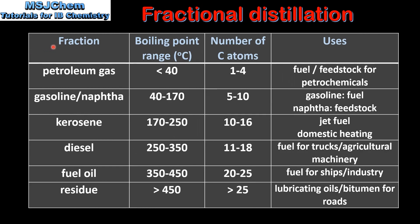Next we look at the different fractions, their boiling points, the number of carbon atoms, and some of their uses. If we look at the uses we can see that the majority of the fractions are used as fuels. The lighter fractions are also used as feedstocks for petrochemicals, and the heavier fractions are used as lubricating oils and bitumen for surfacing roads.